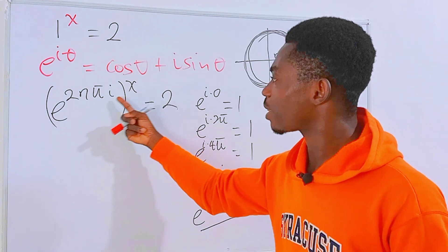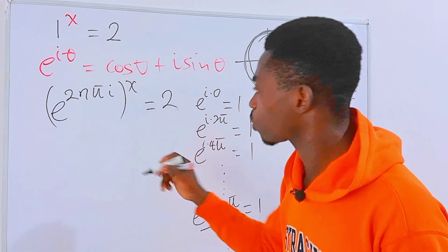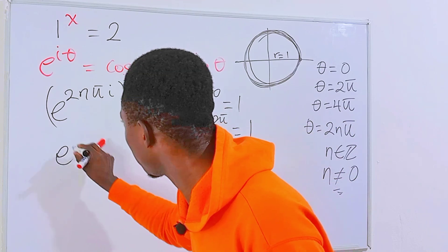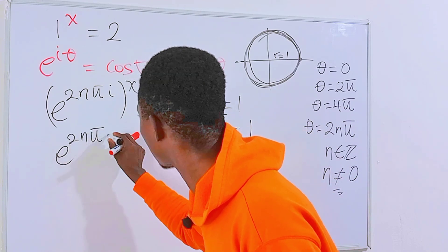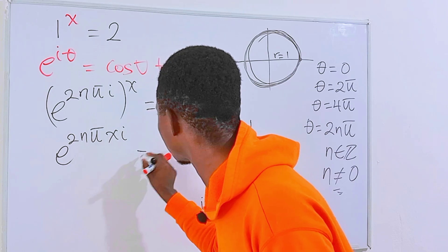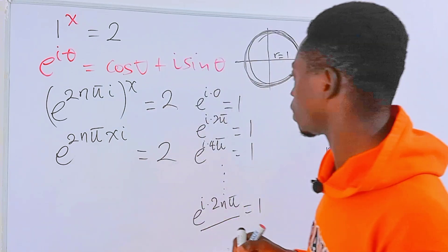From indices, we can simply multiply this by the power here. So we will have e to the power 2nπxi equals 2, just like that.